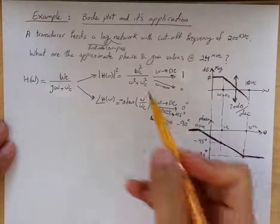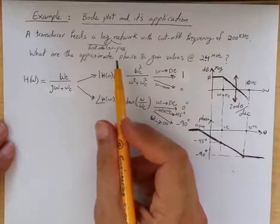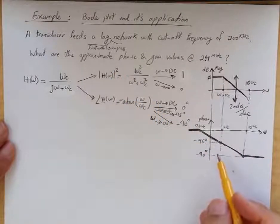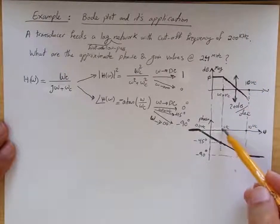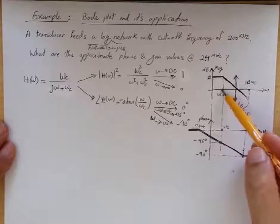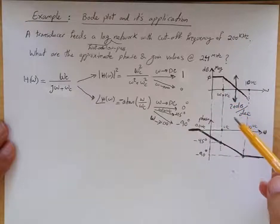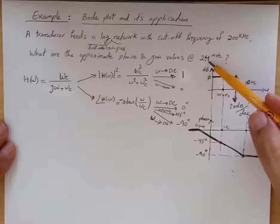That's the phase Bode plot for this first-order low-pass lag network. Given that the cutoff frequency is 200 kilohertz, this point on the frequency scale is 200 kHz. Given that the target frequency of interest is 2.4 megahertz,